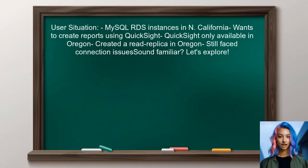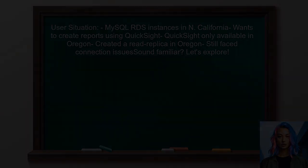Here's the situation we're diving into. One user has MySQL RDS instances in the N. California region and wants to create reports using QuickSight. However, they discovered QuickSight is only available in the Oregon region. After creating a read replica in Oregon, they still faced connection issues. Sound familiar? Let's explore this together.